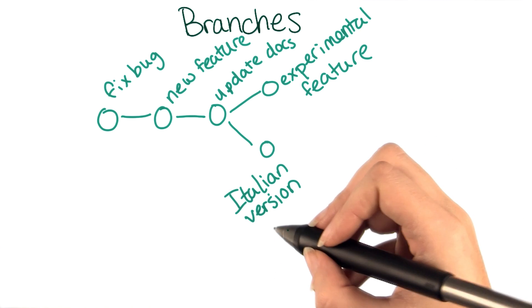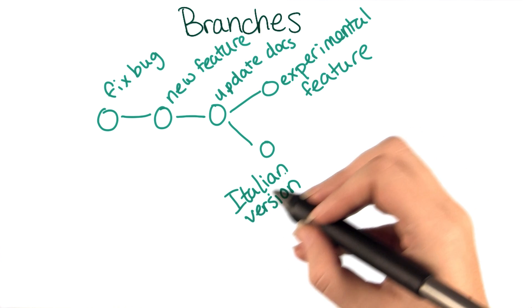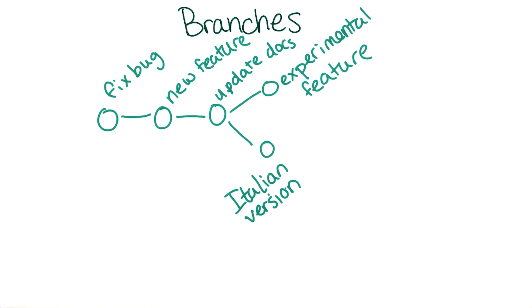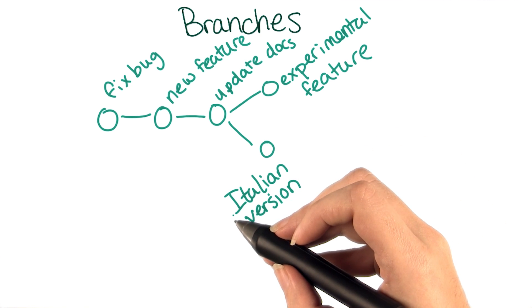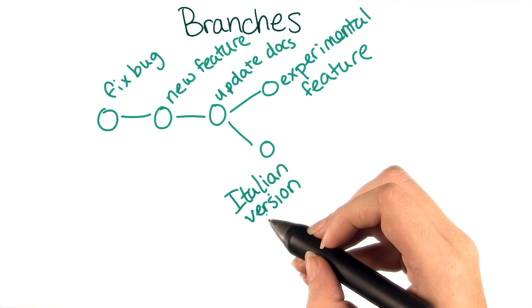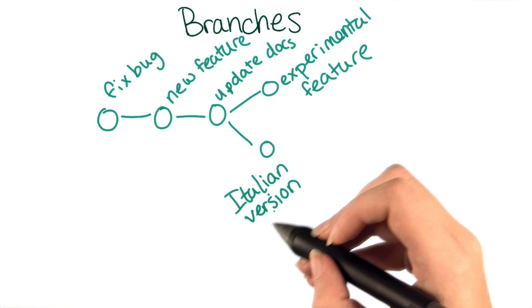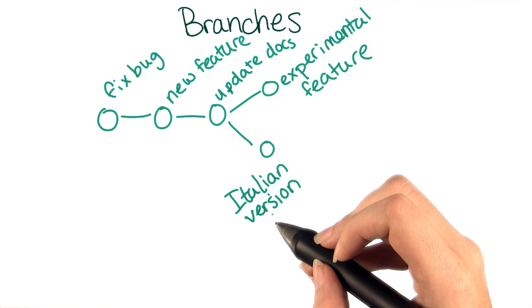Or maybe you're learning Italian and want to make a version of your project for Italian-speaking people while leaving the native language version intact. In this case, you'll probably want to eventually create a setting for switching between the two languages. But maybe as a first step, you just try changing the text and seeing if you need to rework your layout a little.